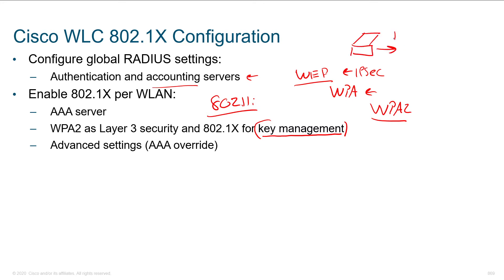In WEP, when the user wanted to encrypt traffic, you had data, the RC4 algorithm being used to encrypt it, and this super secret key. They went ahead and used the same key for authentication — the password to get on the network was also the key used to encrypt your data. This was built without any cryptographic review; nobody knew what they were doing and they didn't ask. It was a big mess.